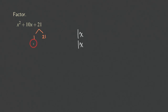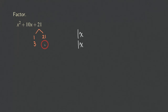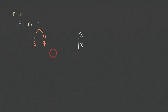Two does not go into 21, so two doesn't work. The next one is three, and three does go into 21 — the other number you multiply by to get 21 is seven. So those are all the combinations we have: one and 21, or three and seven. We're not considering negative numbers right now, so just two combinations.